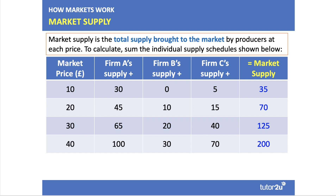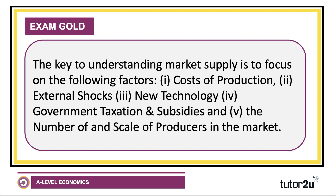Our focus in this video is not necessarily a movement along the supply curve caused by a change in the market price, but the causes of shifts in the market supply curve. The key to understanding market supply shifts is to focus on certain key factors: costs of production affecting all producers in the market, external shocks such as weather-related events, new technologies, government taxes and subsidies, and crucially the number and scale of producers in the market.